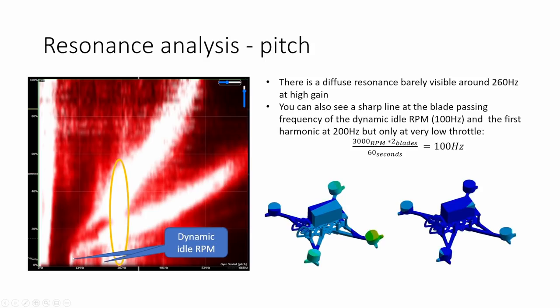If we look now at the pitch axis we can see that there's a very diffuse resonance barely visible around 260 hertz at high gain and I can sort of pick it out just outside of the motor band noise but it's not very much stronger than just the normal motor noise. You can also see a really sharp line at the blade passing frequency of the dynamic idle RPM here at 100 hertz and there's also a first harmonic here as well. And this is occurring because I've got my dynamic idle for this quad set to 3000 rpm, we've got two blades on the props and so that's giving us a blade passing frequency of 6000 rpm or 100 hertz. So you can see that here but it's only visible at very low throttle because it's only at very low throttle that dynamic idle is actually going to be active. Obviously at higher throttle positions the motors are going to be spinning very much faster than the dynamic idle value.